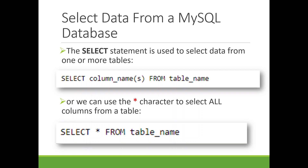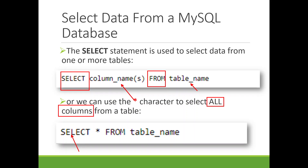After adding data to the table, let's see how to retrieve data. To retrieve data from the table you use the SELECT statement. The syntax is: SELECT, then the column name or names, then the keyword FROM, then the table name. If you want to select all columns from the table you can use the star (*), which means all columns, so you don't have to specify each column name individually.